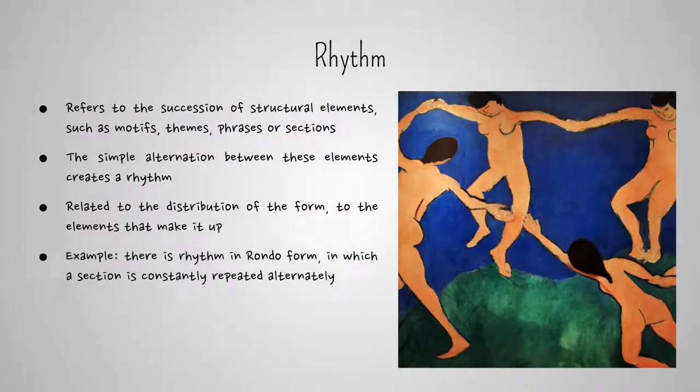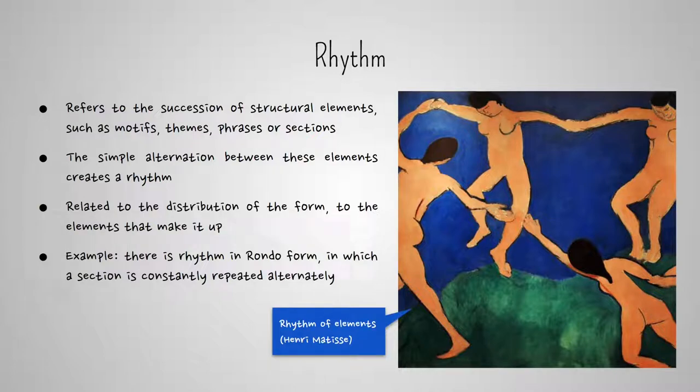Then, there is rhythm in the Rondeau form, for example, in which a section is constantly repeated alternately. There's rhythm in the image on the right, because an element, the dancers, is repeated alternating with spaces in which it doesn't appear.